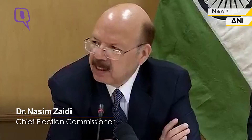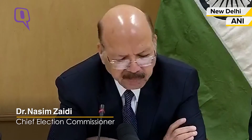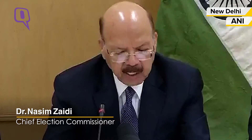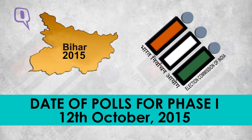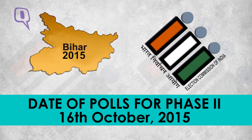The upcoming Bihar election will be conducted in five phases. For phase 1, the date of poll would be 12 October 2015. For phase 2, the date of poll would be 16 October 2015.